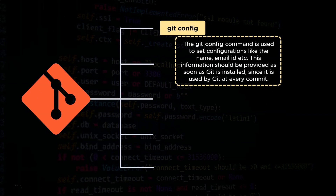The git config command is used to set configurations like name, email ID, etc. This information should be provided as soon as git is installed, since it is used by git at every commit. When we begin working with git bash, the first commands we generally execute are git config user.name and git config user.email.